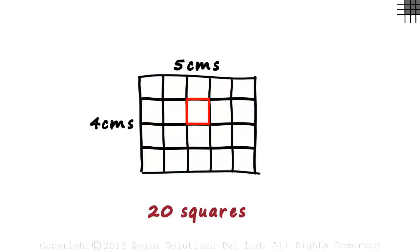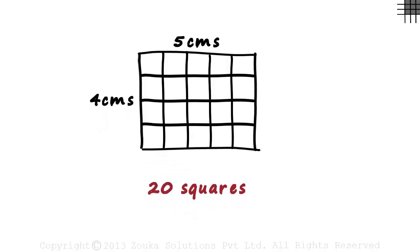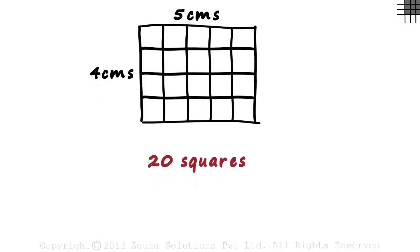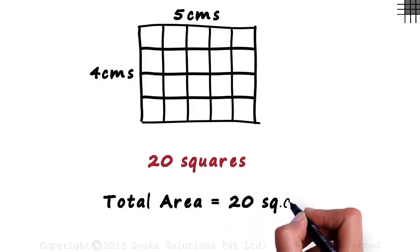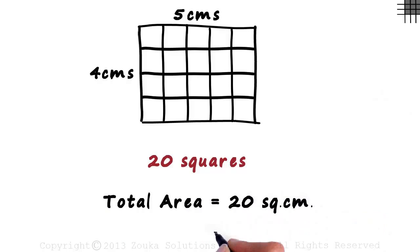Each of these tiny squares inside will have sides of length 1 centimeter. Which means we have 20 small squares of area 1 squared centimeter. So if we add up the area of each of the 20 squares, we get the total area as 20 squared centimeters. That is actually equal to 5 multiplied by 4 squared centimeters.